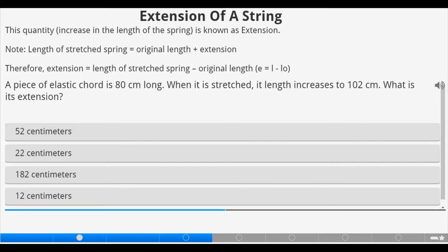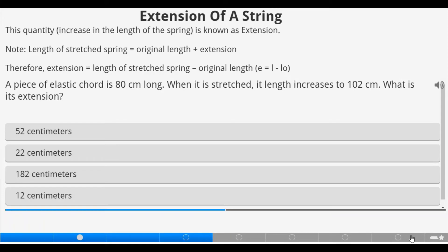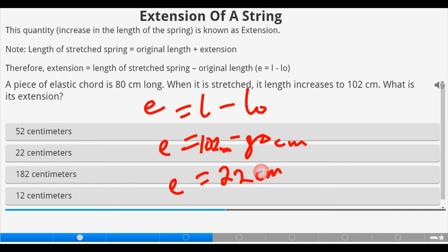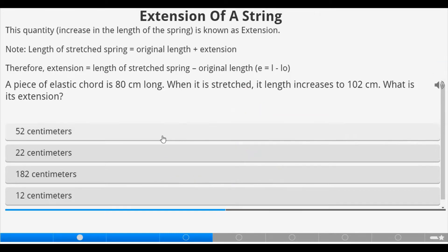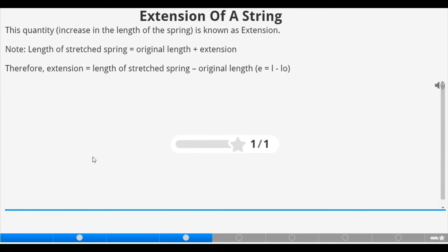A piece of elastic cord is 80 centimeters long. When it is stretched, its length increases to 102 centimeters. What is the extension? That means our extension is equal to l minus l naught. Now we have our l naught to be 80 centimeters, while the increased length which is l is 102 centimeters. So extension now gives 22 centimeters. That's part of the options. So let's pick it and check. We have it like this. That's correct, so let's move on.